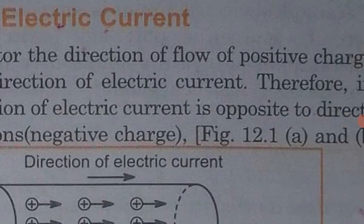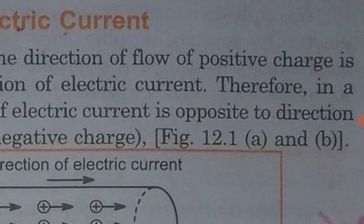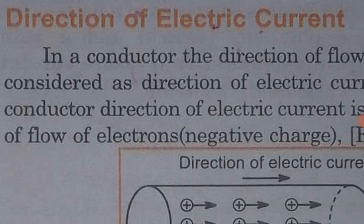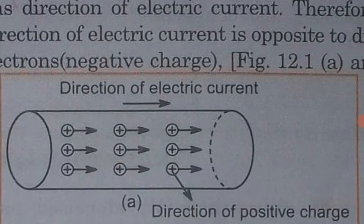Therefore, in the conductor, the direction of the electric current is opposite to the direction of flow of electrons (negative charge). The meaning is that by convention, the direction of electric current is towards the positive charge, but the direction of flow of current is opposite to the negative charge.